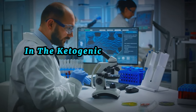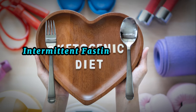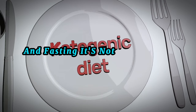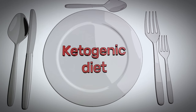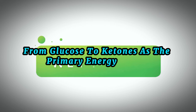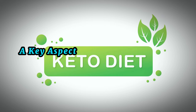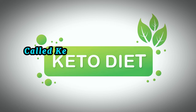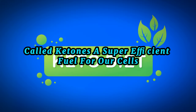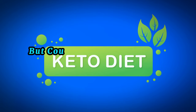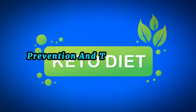Let's delve into the role of intermittent fasting in the ketogenic and carnivore diet. Intermittent fasting is a dietary strategy that cycles between periods of eating and fasting. It's not about what foods to eat, but rather when to eat them. This pattern of eating could potentially enhance the metabolic switch from glucose to ketones as the primary energy source, a key aspect of the ketogenic and carnivore diets. When we fast, our body depletes its glucose reserves and starts breaking down stored fat into molecules called ketones — a super-efficient fuel for our cells. This metabolic shift not only supports weight loss and improved metabolic health, but could also have profound implications for cancer prevention and treatment.